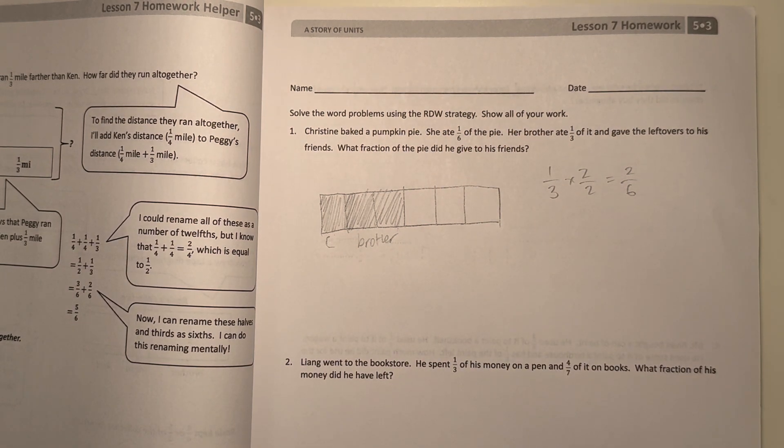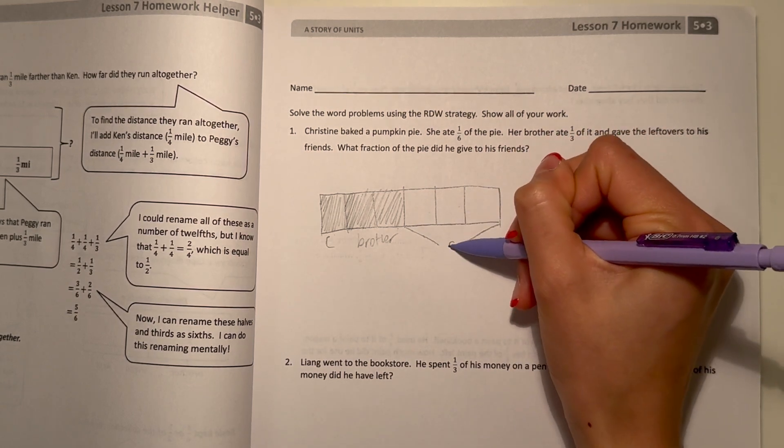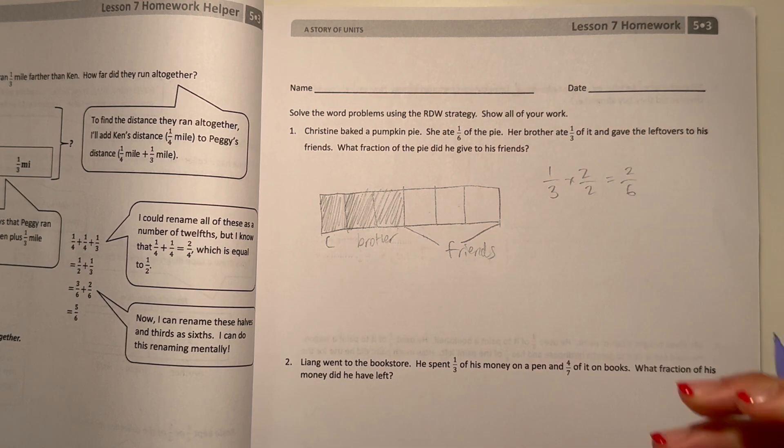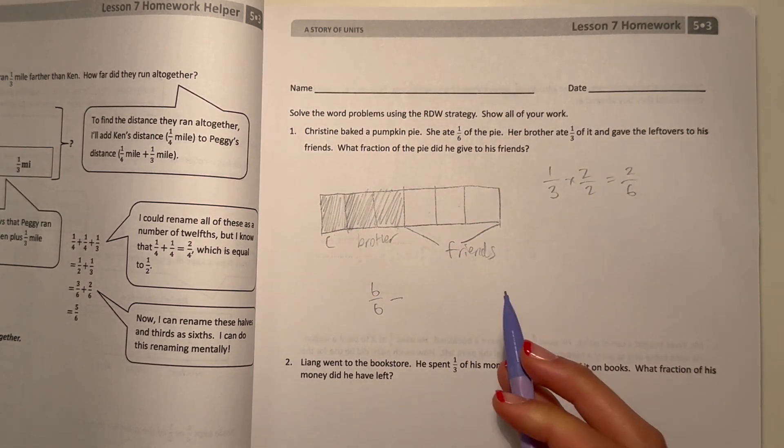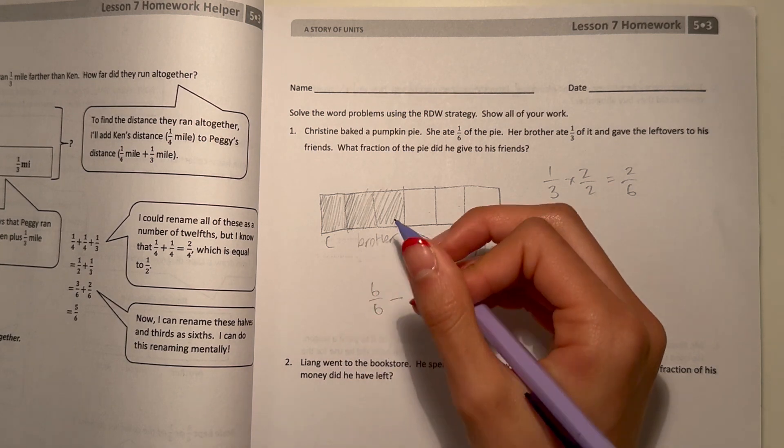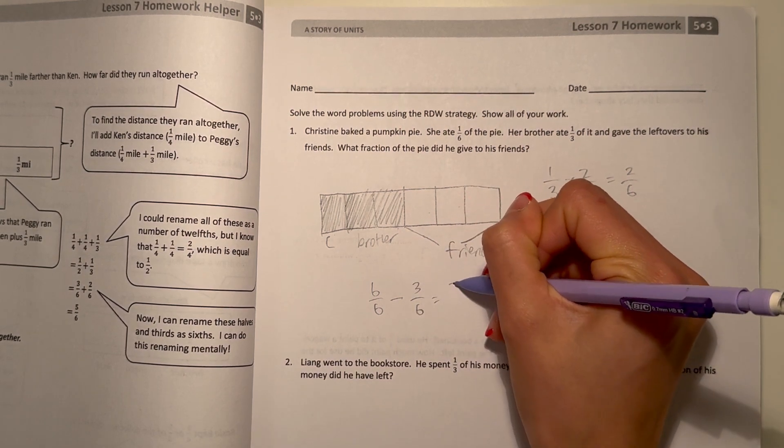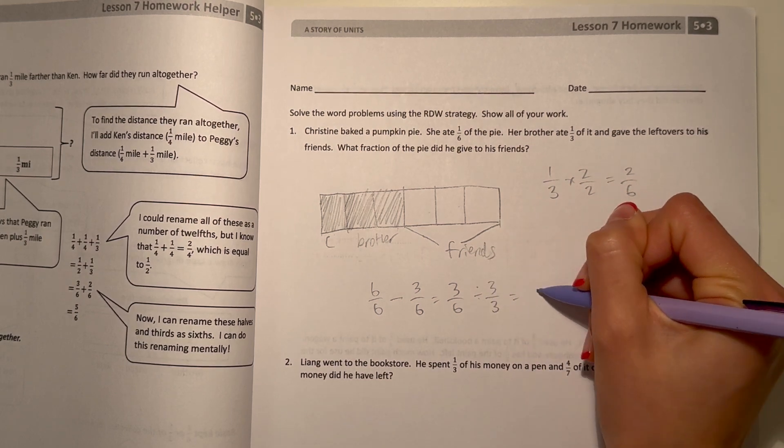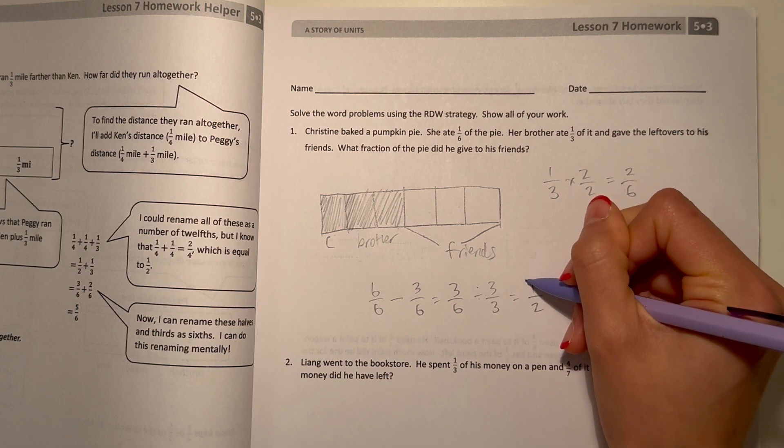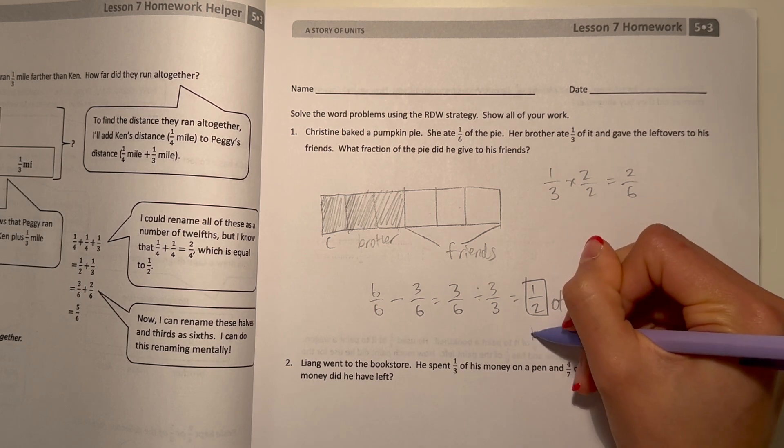He gave the leftovers to his friends. That means you should see that he gave this part to his friends. So, it should be three-sixths. We want to show our work. Total is six-sixths minus one-sixth and two-sixths, minus three-sixths, equals three-sixths left over. We simplify that, divide by three, get one-half. So, one-half of the pie to friends.